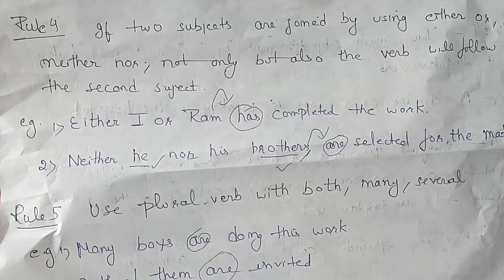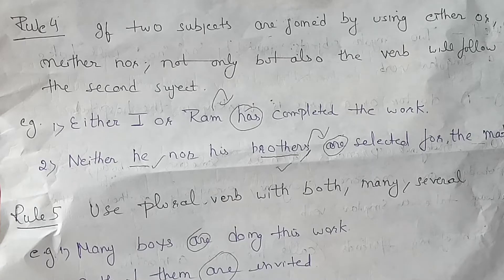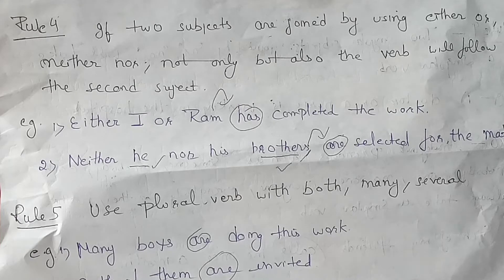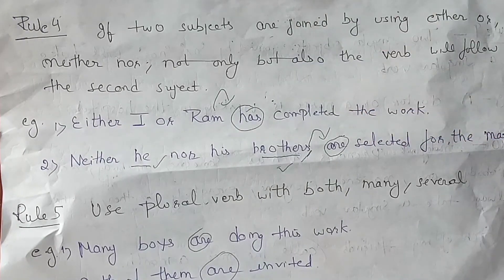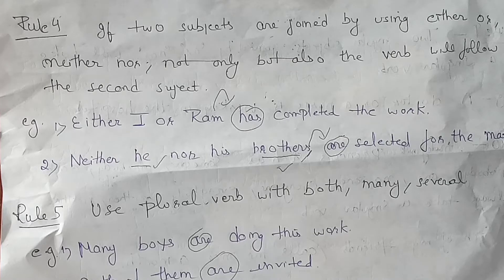Rule number four: if two subjects are joined by using 'either...or,' 'neither...nor,' or 'not only...but also,' the verb will follow the second subject. For example: 'Either I or Ram has completed the work.' Here the verb 'has' follows the second subject 'Ram,' which is singular. If the first subject 'I' were followed, we would use 'have.'